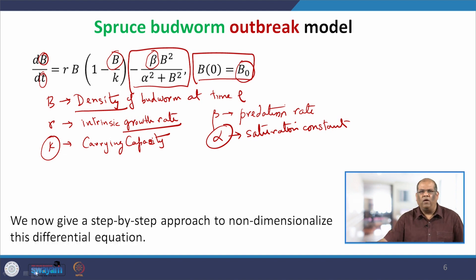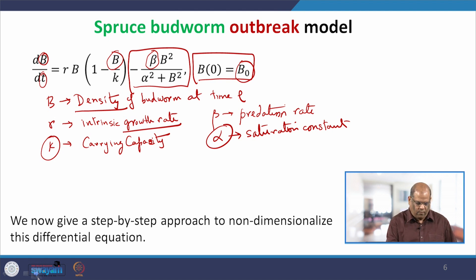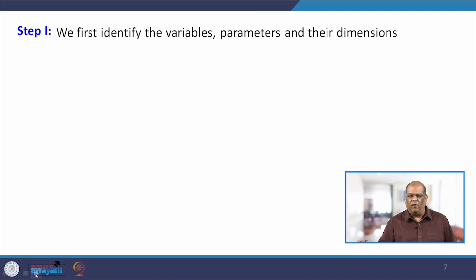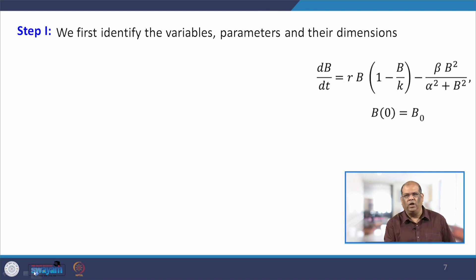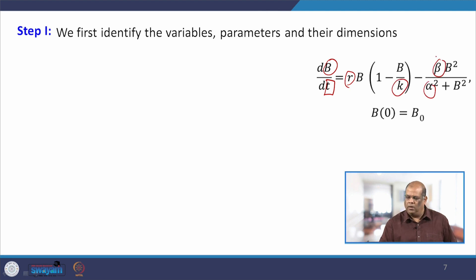T is obviously the time, and the initial condition is that at time t = 0, some initial density B0 of the budworm is present. We now give a step-by-step approach to non-dimensionalizing this differential equation. Step 1: identify the variables, the parameters, and their dimensions. B is the dependent variable, t is the independent variable, and r, k, alpha, and beta are the parameters.